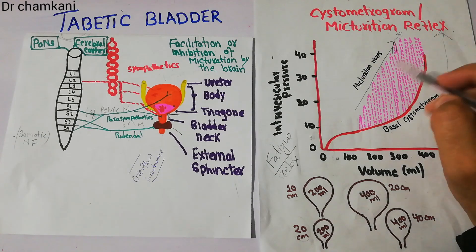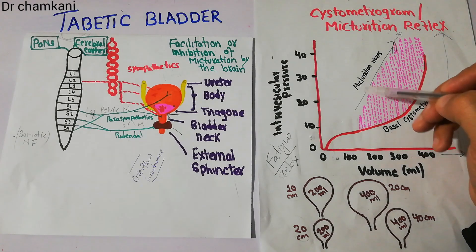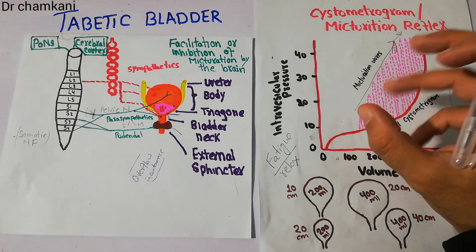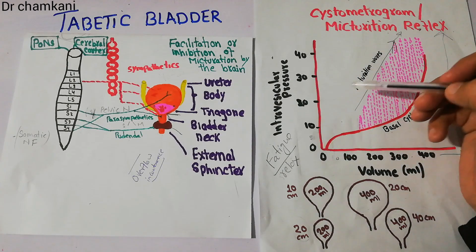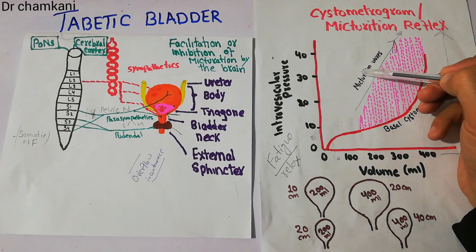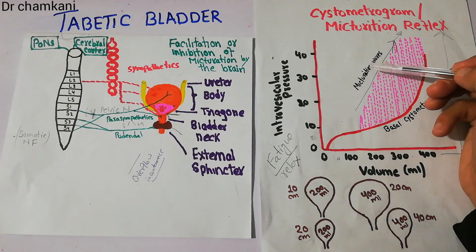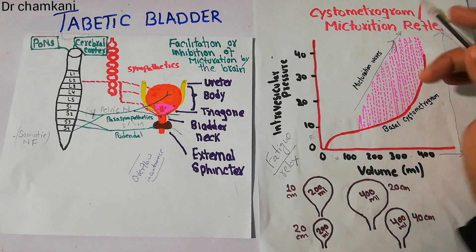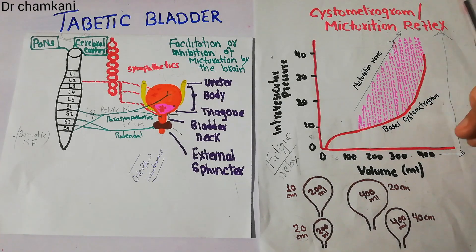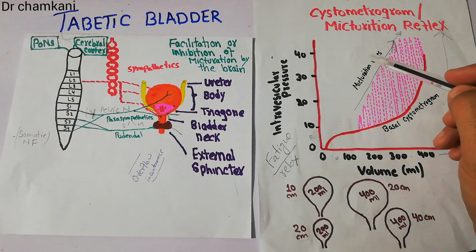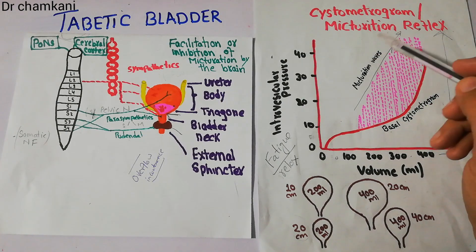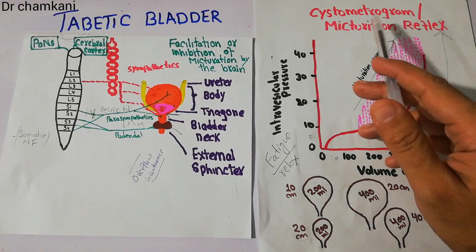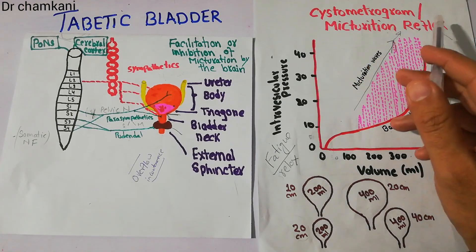At every level of pressure, there are contraction waves in which the urinary bladder starts contracting for a while and then settles down. These waves are called micturition waves or micturition contractions, which lead to the urination process. These micturition contractions, necessary for urination, are caused by the micturition reflex.